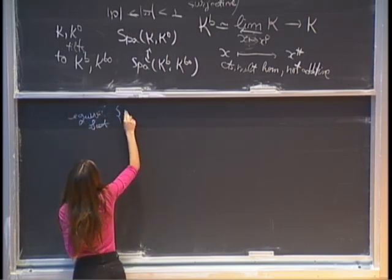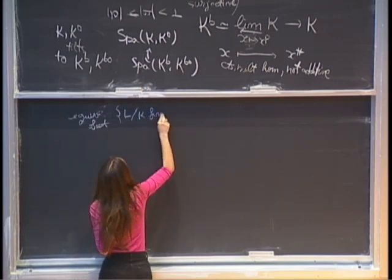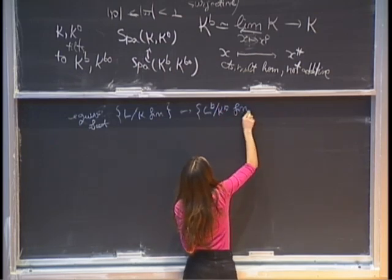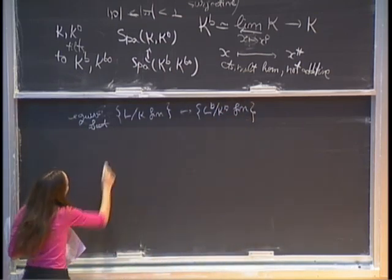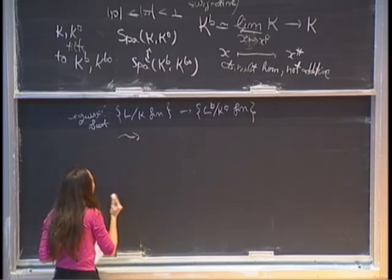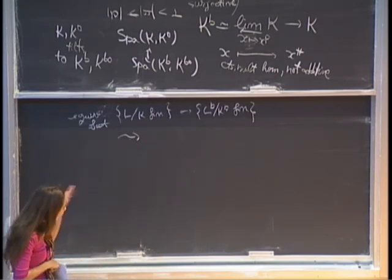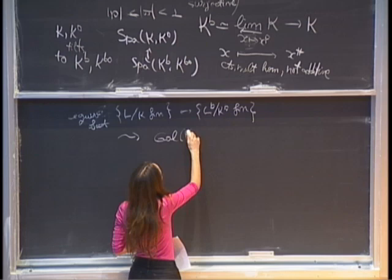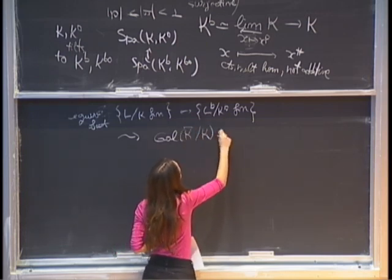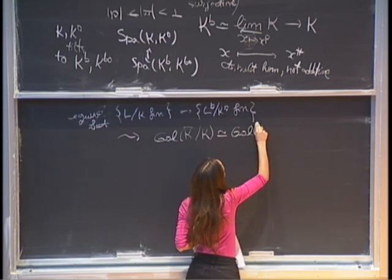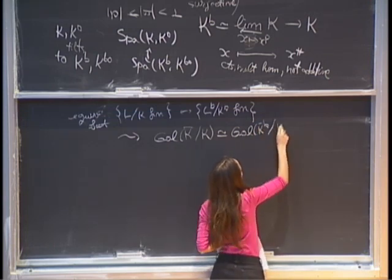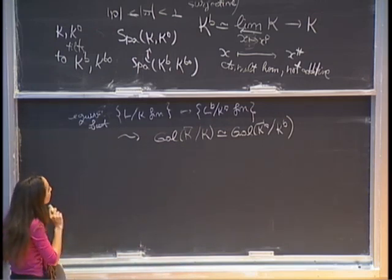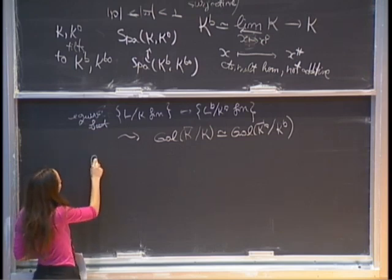There's an equivalence of categories between finite extensions L over k and finite extensions L-flat over k-flat. That leads to an equivalence of étale sites, and in turn to an isomorphism on the Galois groups: Gal(k-bar over k) is isomorphic to the Galois group of k-flat.